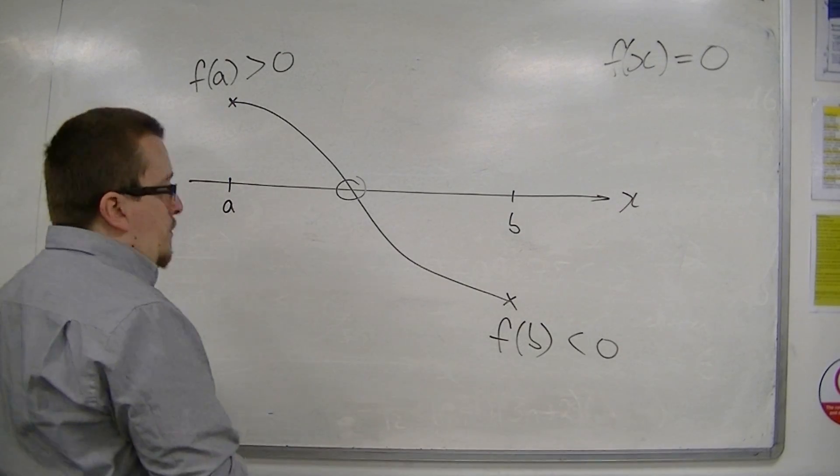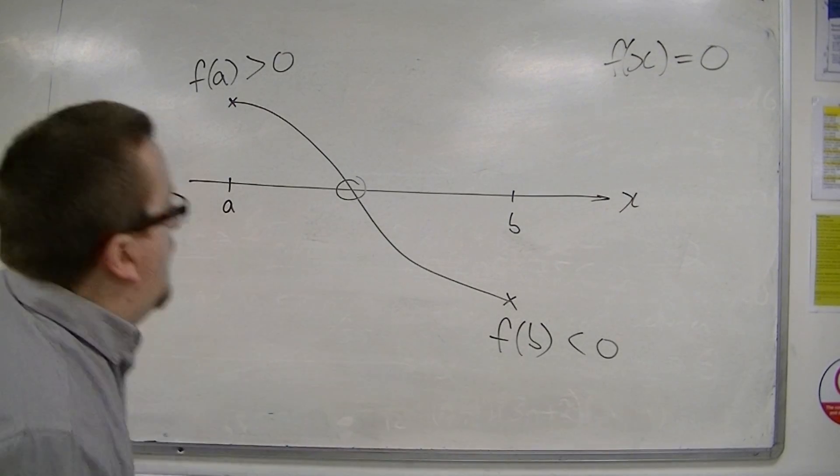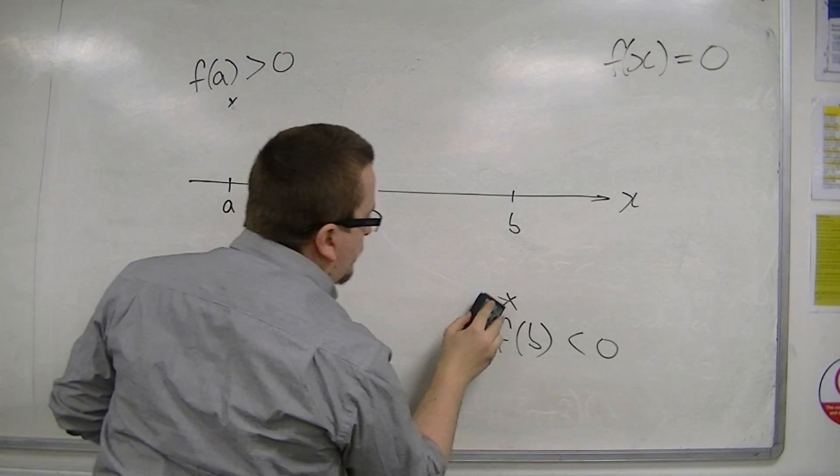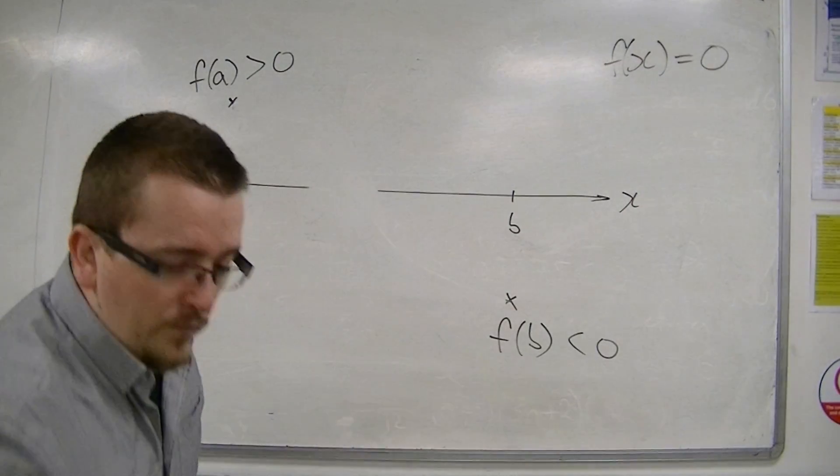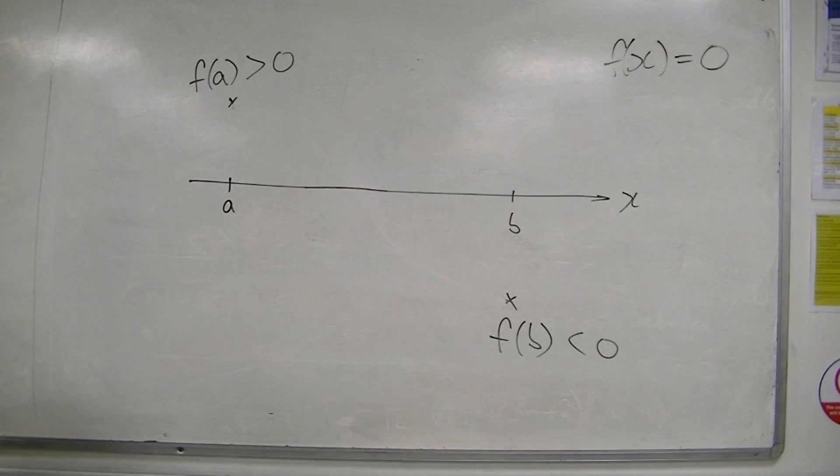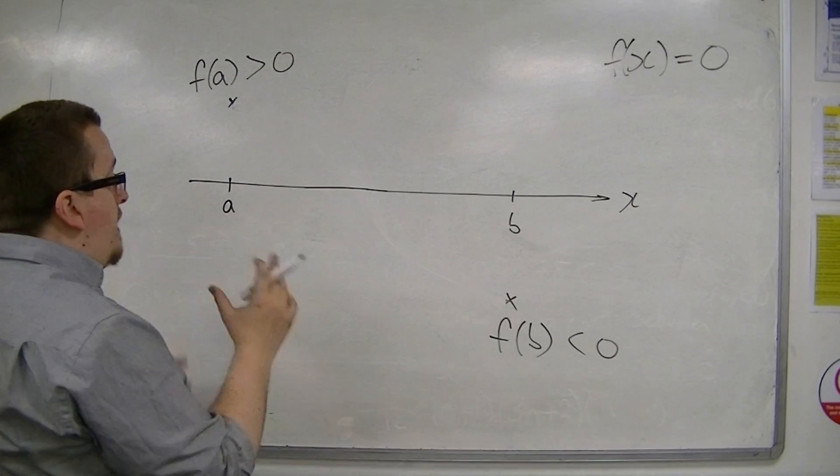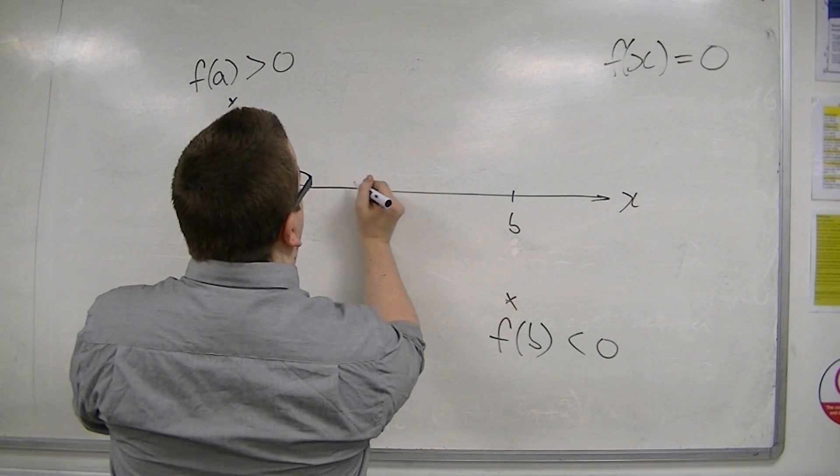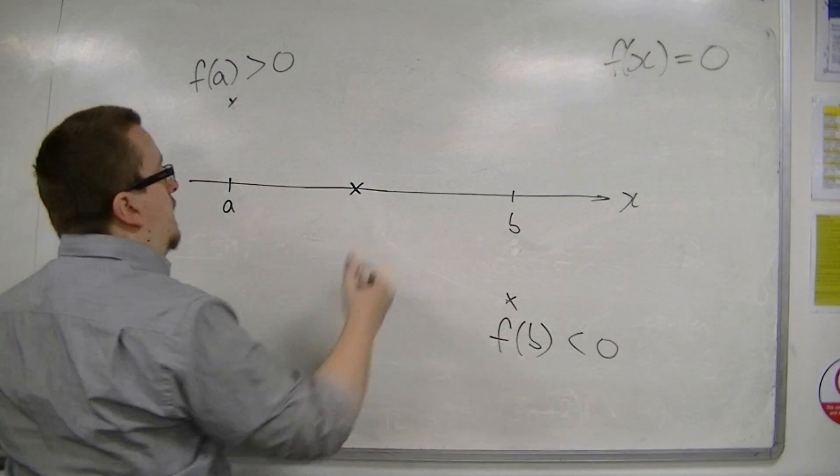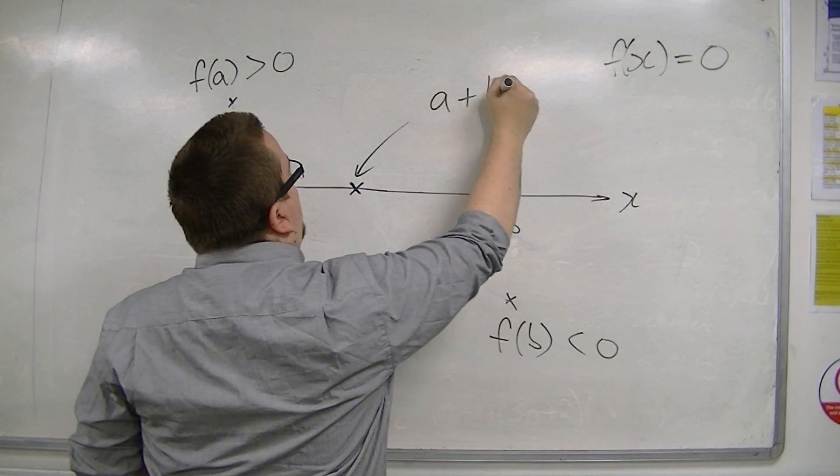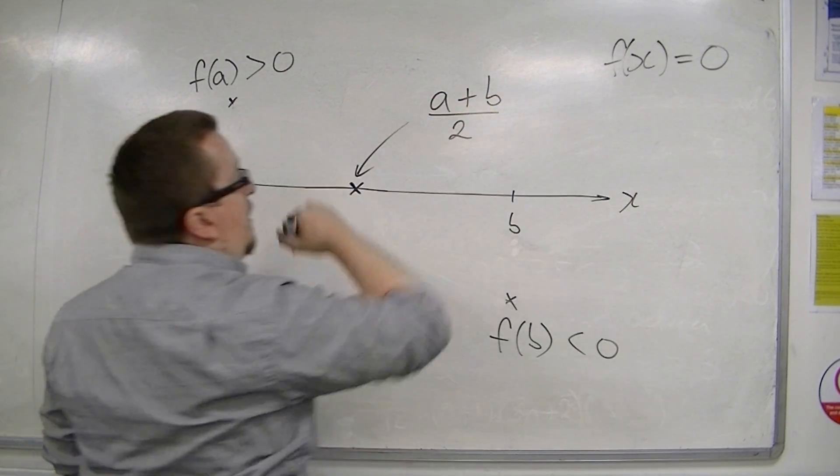So, what I could do to home in on the solution is look at the midpoint between a and b. The midpoint here can be found by adding a and b together and dividing by 2.